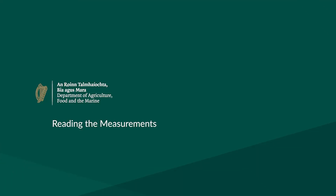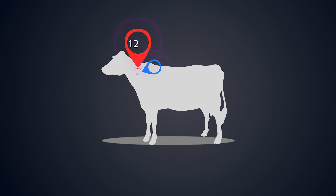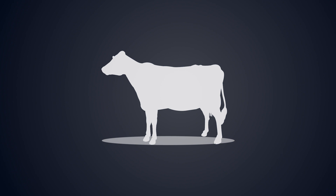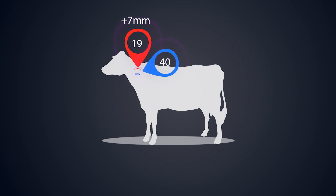Animal number 85 had first-day skin fold measurements of 12 mm at the avian injection site and 16 mm at the bovine injection site. Examination 72 hours later reveals a small circumscribed swelling at the avian site and a diffuse edema extending in the subcutaneous tissue at and below the bovine site. Measurement of the avian injection site is 19 mm, an increase of 7 mm; measurement of the bovine injection site is 40 mm, an increase of 24 mm. Since the reaction at the bovine injection site is 17 mm more than the avian site, the animal is deemed a reactor. Additionally, this animal exhibits clinical signs — exudation and edema — at the bovine injection site, so it must be deemed a reactor regardless of skin fold measurements.